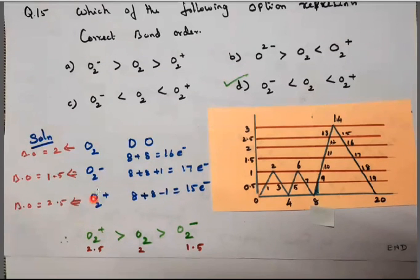So here the highest bond order is O2⁺, and second thing is O2 minus, last one is O2. So O2⁺ 2.5 bond order greater than O2 bond order is 2, is greater than O2⁻ the bond order is 1.5.